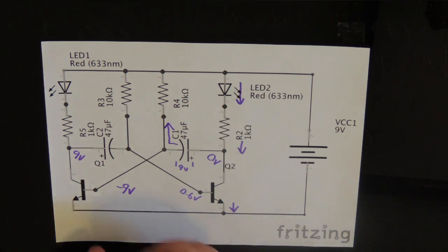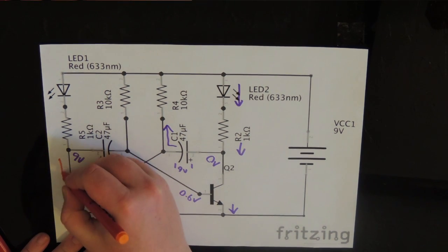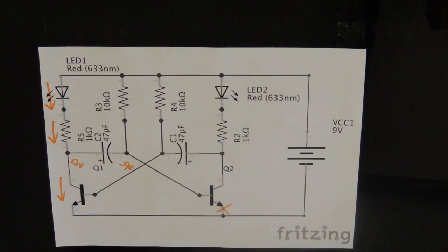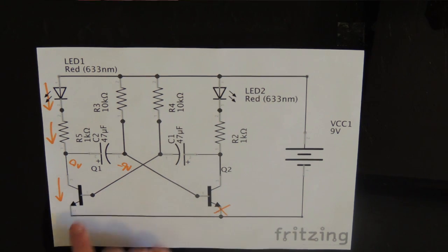At this point, Q1 now starts to conduct. The C2 capacitor now starts to charge up from minus 9V through ground and to the 0.6V turn-on voltage of Q2, and at that point Q2 turns on, thereby switching Q1 hard-off. The cycle then repeats.